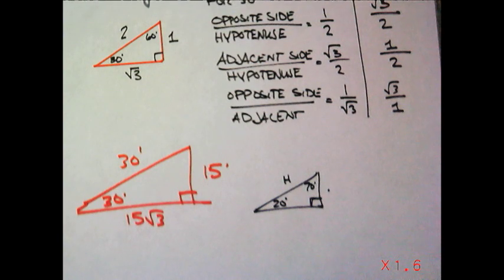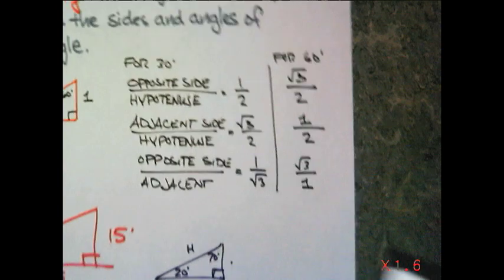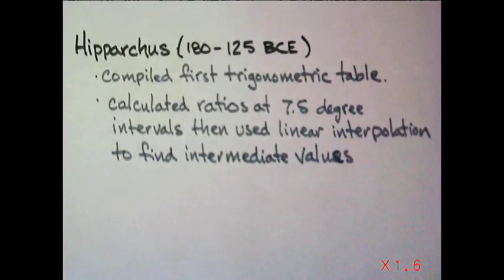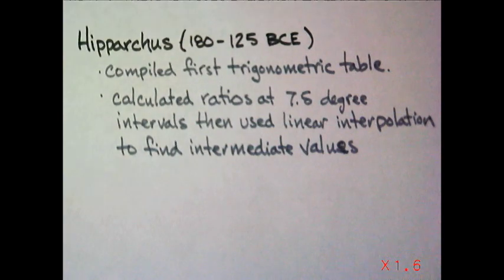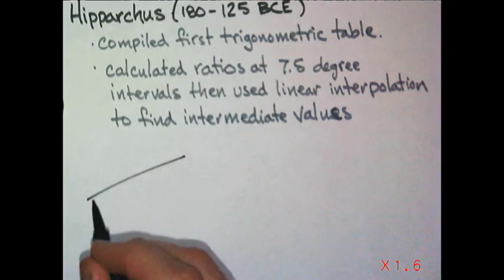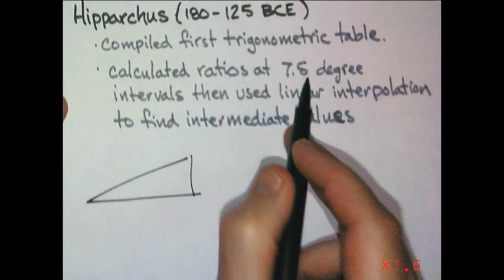A very smart man, a Greek, he lived from 180 BC to 125. His name is Hipparchus. He compiled a trigonometric table. He calculated ratios at seven and a half degree intervals and then used linear interpolation to find the intermediate values. He made a list of all the right triangles with all the degrees. He would make a triangle. Why do you think he used seven and a half degrees?